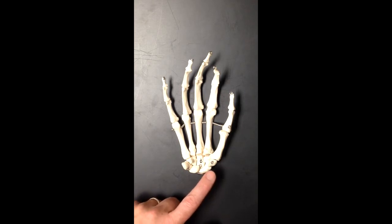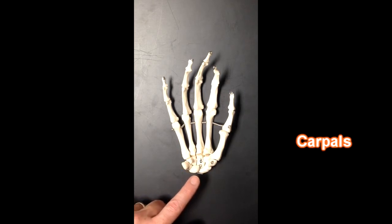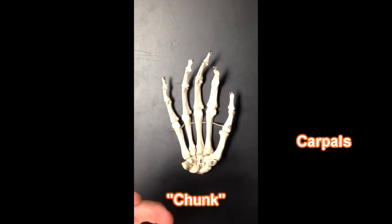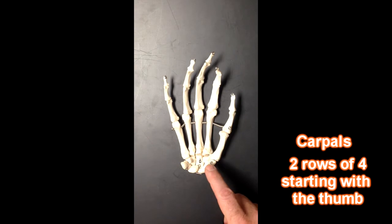Now I'm going to go back to the wrist bones right here, and these wrist bones are sometimes challenging to remember. One thing you can do to remember things is to chunk them, or break them into smaller chunks, smaller sections. So what I like to do is break these up into two rows of four.